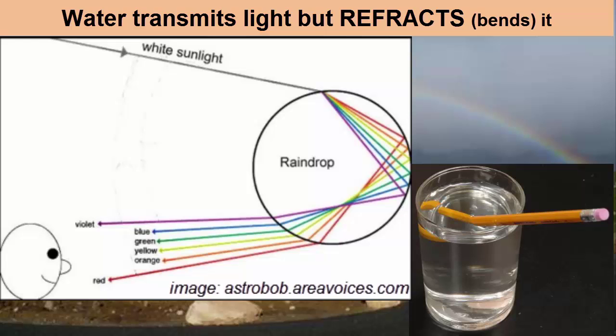Each color of light has a different wavelength, so each color bends at a different angle. The water droplets actually split the light into all its colors, and a rainbow results.